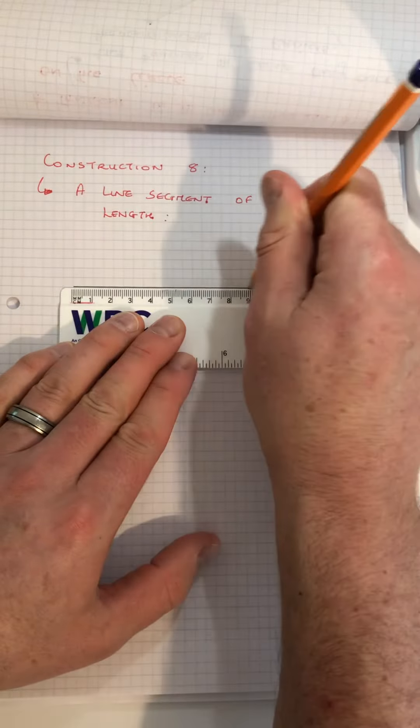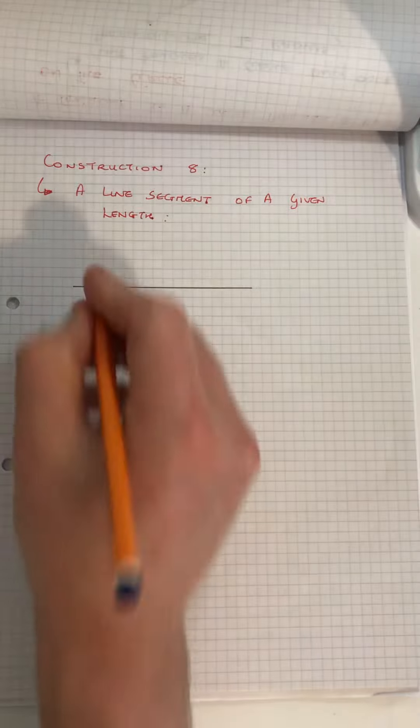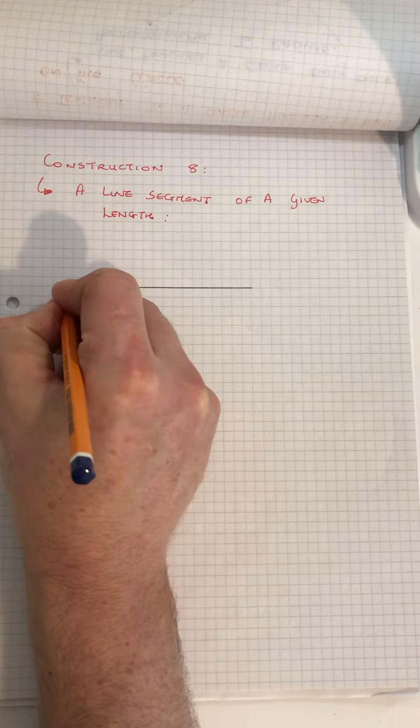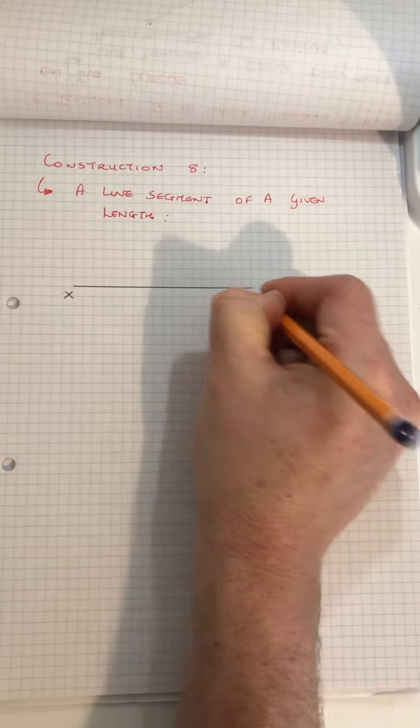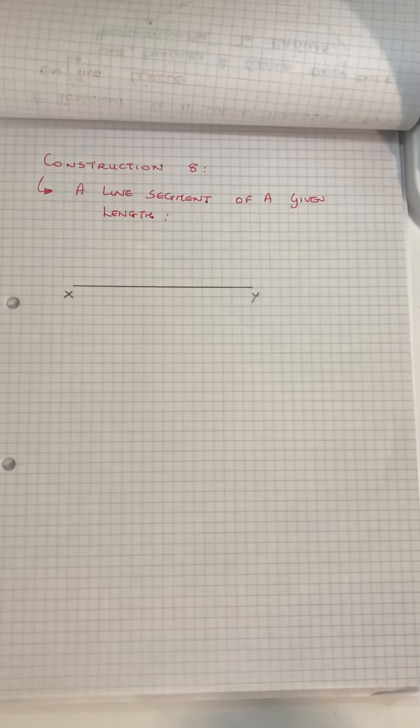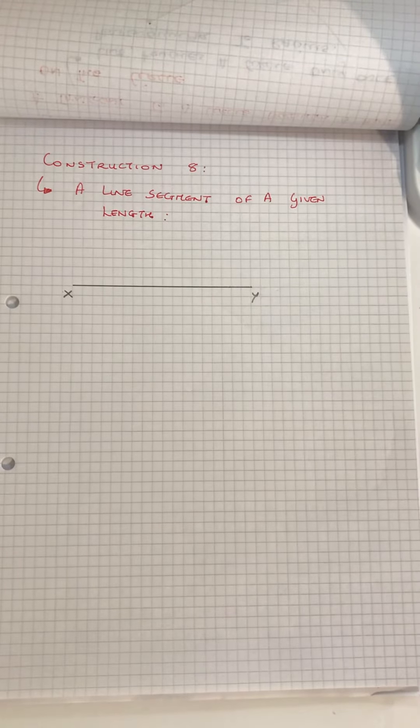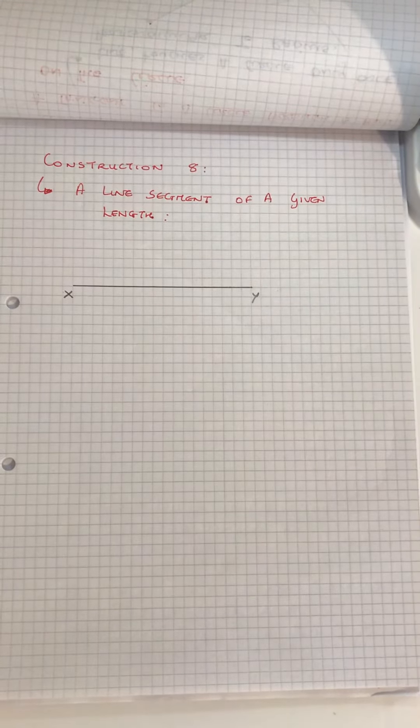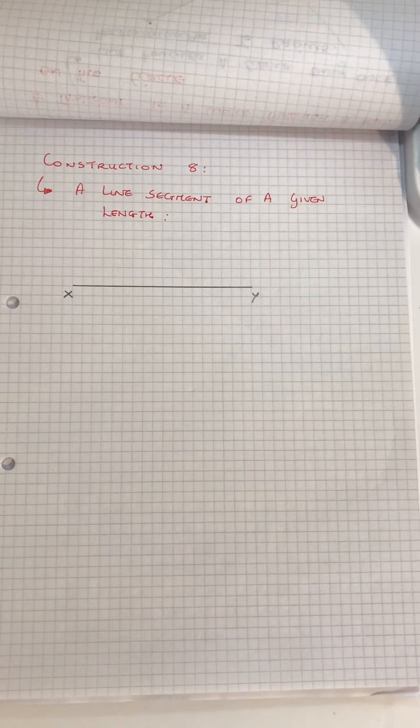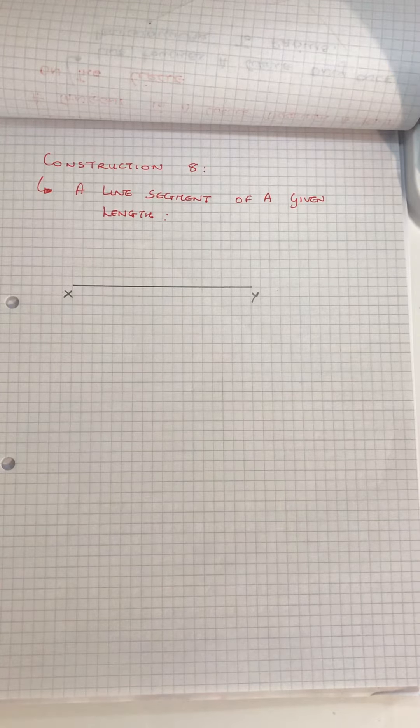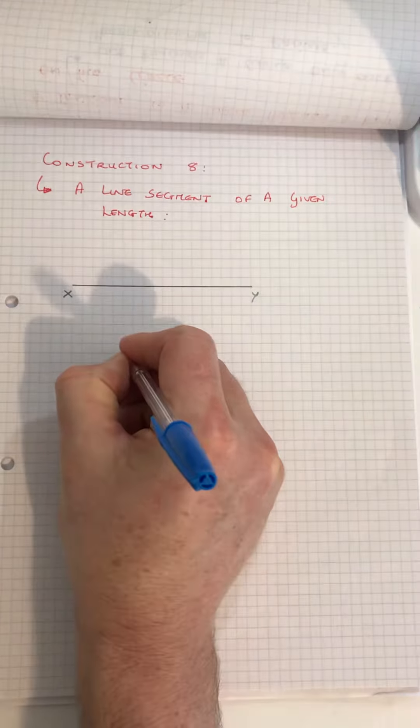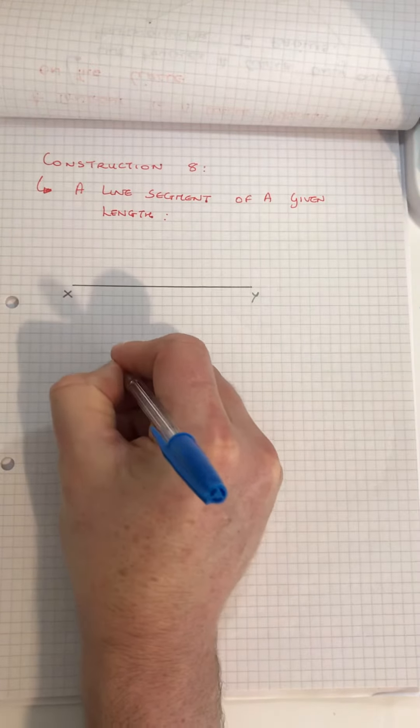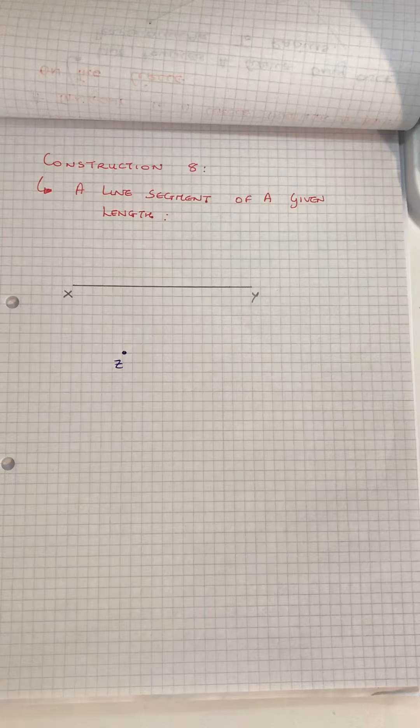There's a line and we're going to call that line XY. That's the line we want to copy. In order to copy the line, we're going to start our line from some point down here. I'm going to start my line from here.